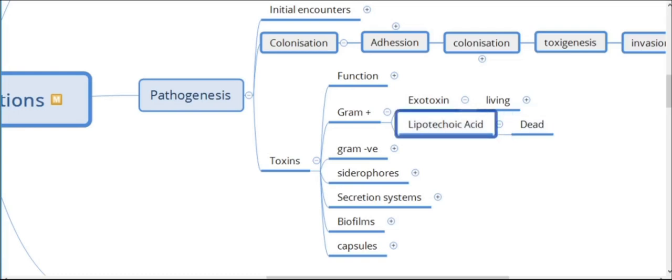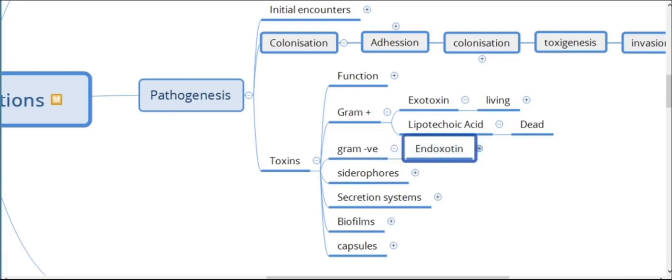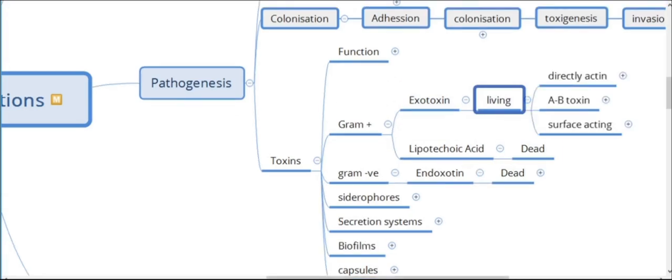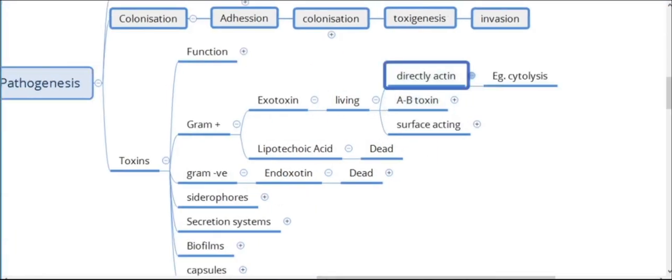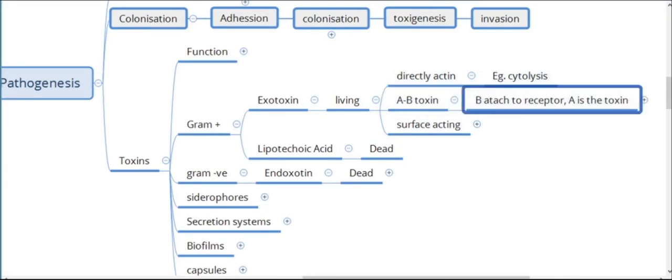Lipoteichoic acids are certain types of toxins released into the environment when gram-positive bacteria die. Gram-negative bacteria have endotoxins in their periplasmic area, and when these bacteria die they release this endotoxin — it is not secreted outside as in the case of exotoxins but kept inside the body of the bacteria, hence called an endotoxin. Exotoxins are diverse: they can be directly acting and causing cytolysis, or they can be AB toxins.